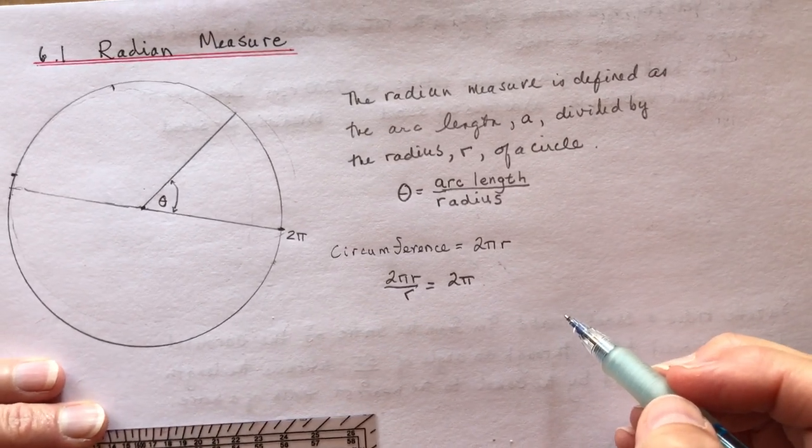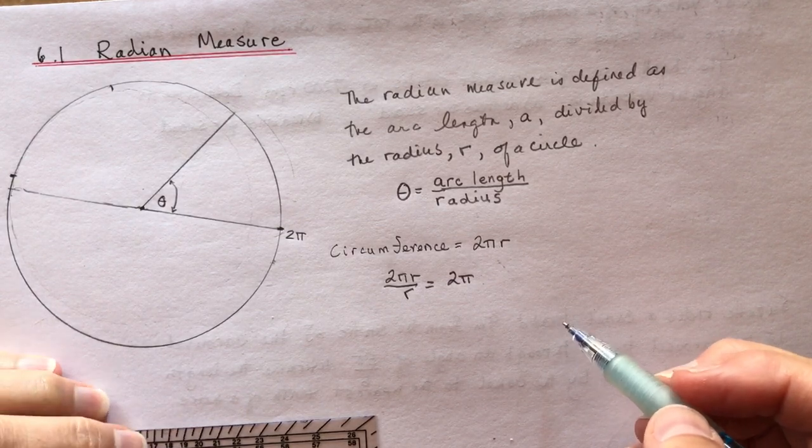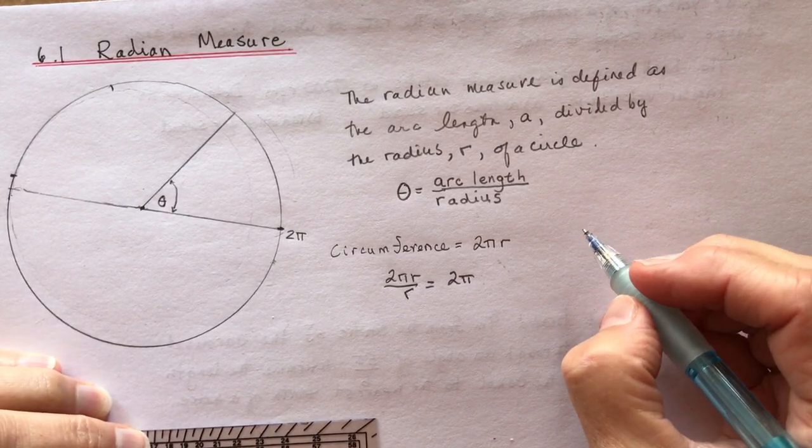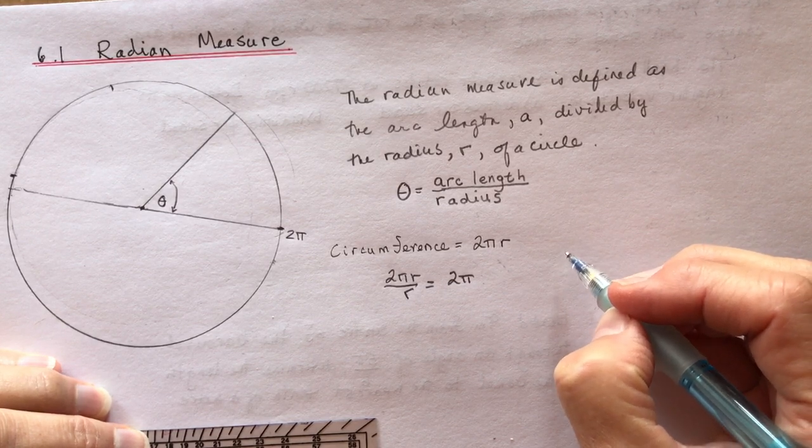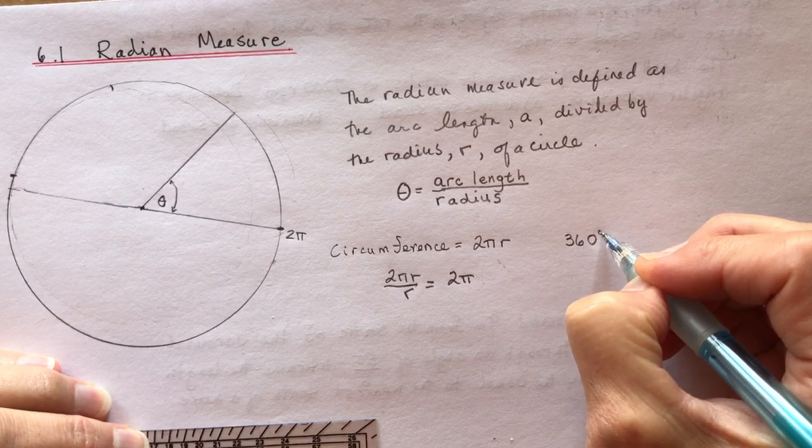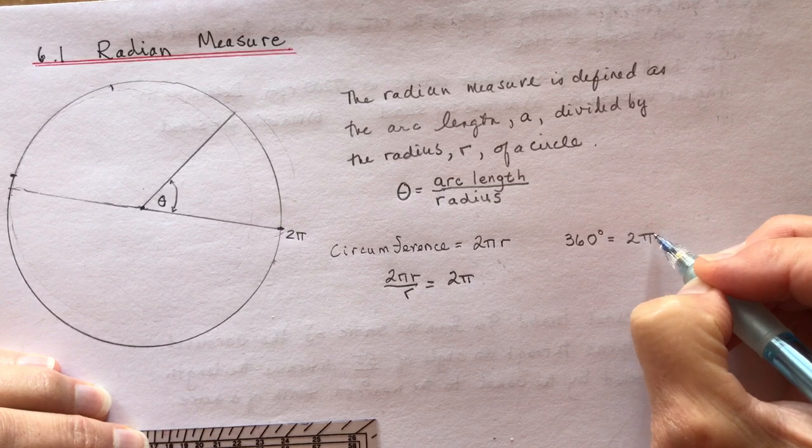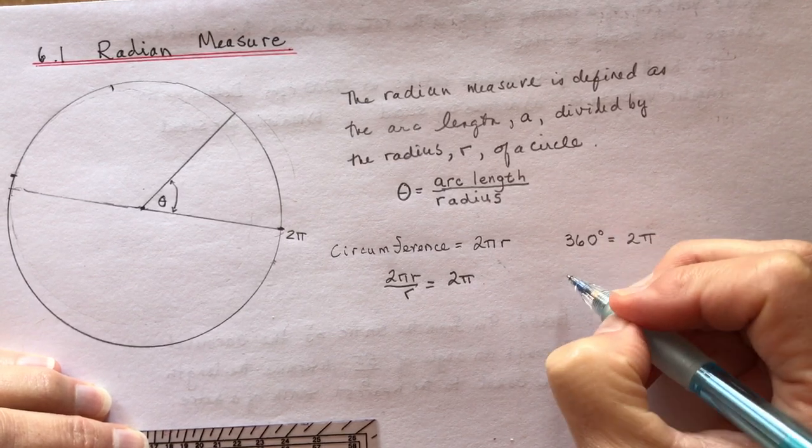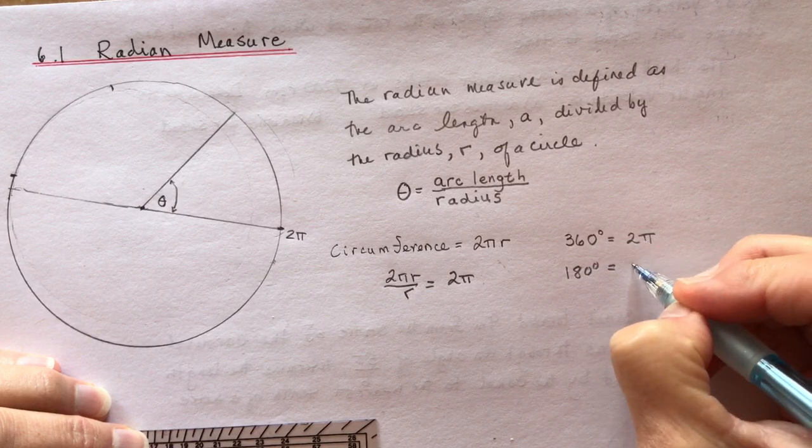This is something that's been drilled into your head, probably talked about doing a 360. That means you've spun around. If you're a skier or snowboarder and you do a 360, you've gone all the way around. So 360 degrees is the same as 2π. That means that 180 degrees is going to be half of that, which is π.